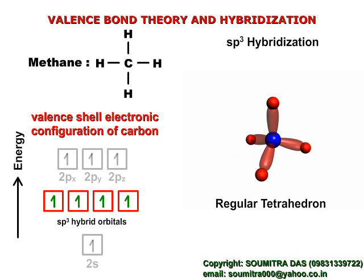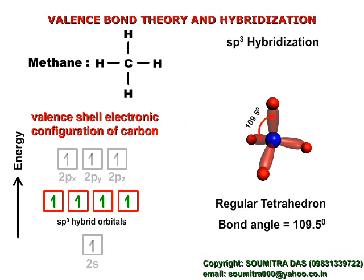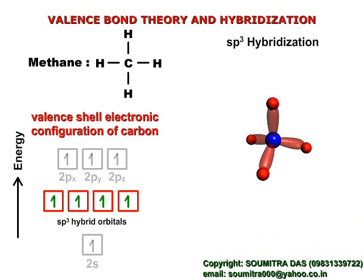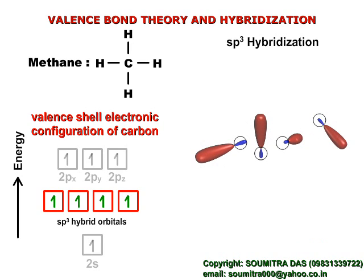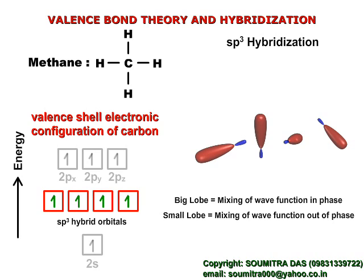The shape is a regular tetrahedron and the bond angle is 109.5 degrees. Now let us see the individual hybrid orbitals. You see a big lobe and a small one. The big lobe is the result of mixing of wave functions in the same phase, and the small lobe is the result of mixing of wave functions which are out of phase.